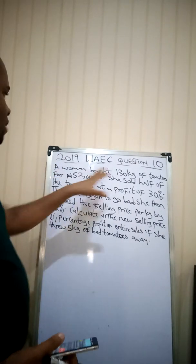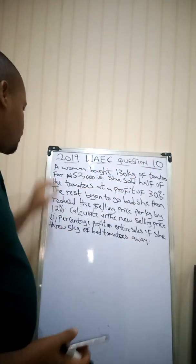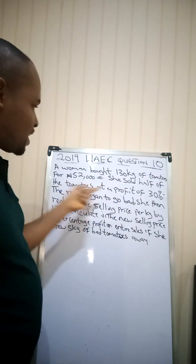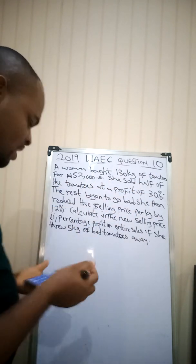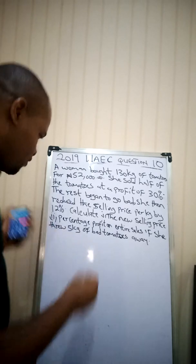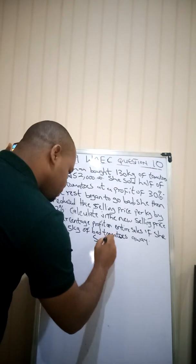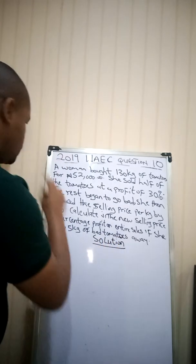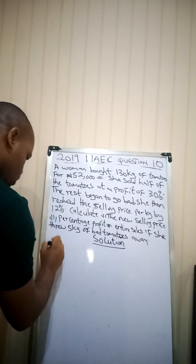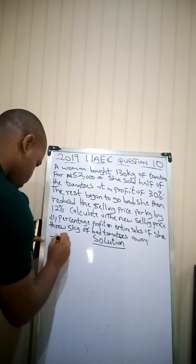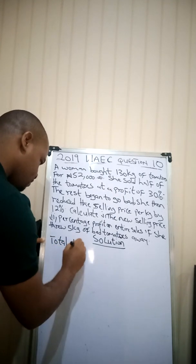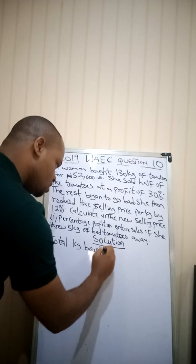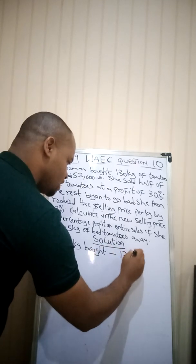It says: a woman bought 130 kg of tomatoes for 52,000 Naira. She sold half of the tomatoes at a profit of 30%. Let's start bringing out all our information. Total kg bought is 130 kg.